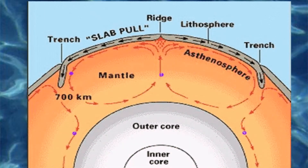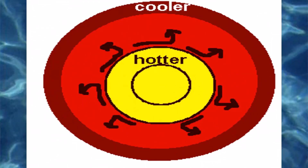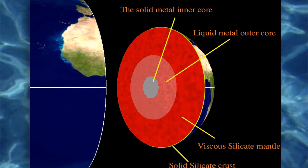As lithospheric plates move away from mid-ocean ridges, they cool and become denser, eventually becoming more dense than the underlying hot mantle. After subduction, the cool, dense lithosphere sinks into the mantle under its own weight, helping to pull the rest of the plate down with it. Slab pull is the force caused by the sinking of the cold, dense lithosphere into the asthenosphere at a destructive margin, hypothesized to be one of the two major driving forces for plate movement.